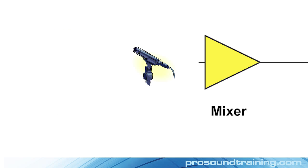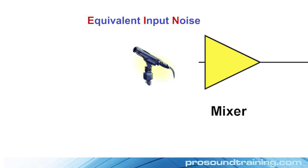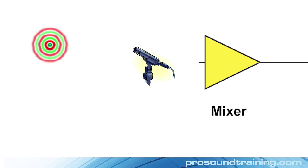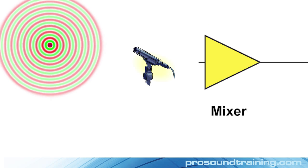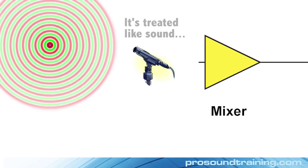A microphone will produce an audio signal that includes a replica of the sound picked up from the environment, as well as its own self-noise. This equivalent input noise (EIN) is unavoidable — it's produced by the electronics within the microphone. Since we usually think about the mic's output signal being based on the acoustic signal that it picks up, this EIN is treated as a minimum SPL that enters an otherwise noiseless mic.